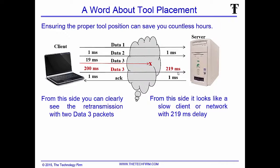As far as the server is concerned, there's 219 milliseconds of latency toward the client or the cloud. This is incredibly important if you're using any kind of tools to measure retransmissions — your protocol analyzers, even your application performance monitoring tools — anything that looks for a retransmission or delay may be misleading you if you don't have the tool in the right spot.